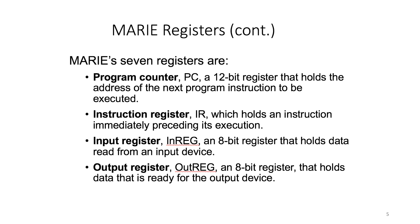The next register is the program counter, shortened to PC. This is a 12-bit register that holds the address of the next program instruction to be executed. Basically, the program counter points to the address of the next instruction to be executed.